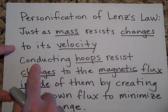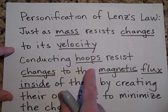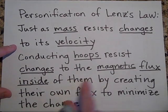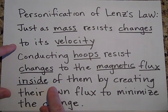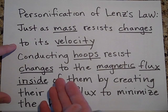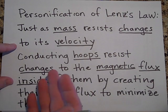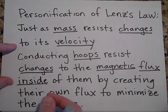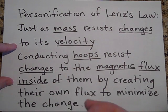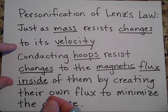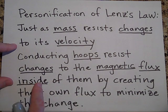Same with conducting hoops: they resist changes in the magnetic flux inside them. They're like the ultra-ultra conservative as far as magnetic flux is concerned — they don't want the magnetic flux to change inside them.